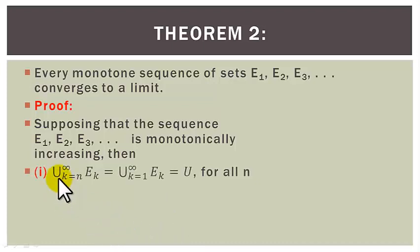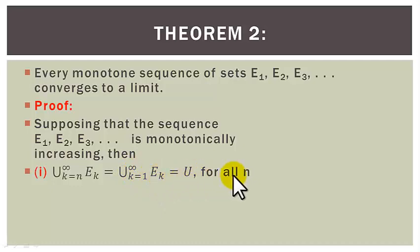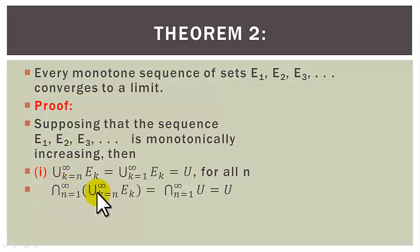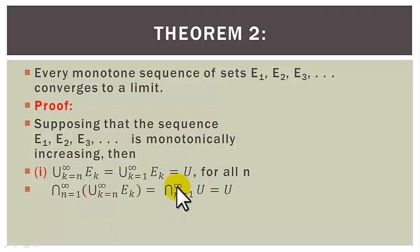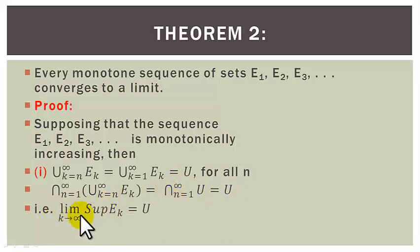Then: (1) the union of Ek as k goes from n to infinity is equal to the union of Ek as k goes from 1 to infinity, which is a constant set. Let this union be equal to U for all n. Now, the intersection as n goes from 1 to infinity of this union equals the intersection of U as n goes from 1 to infinity, which is equal to U. That is, the limit supremum of Ek as k tends to infinity is equal to U.